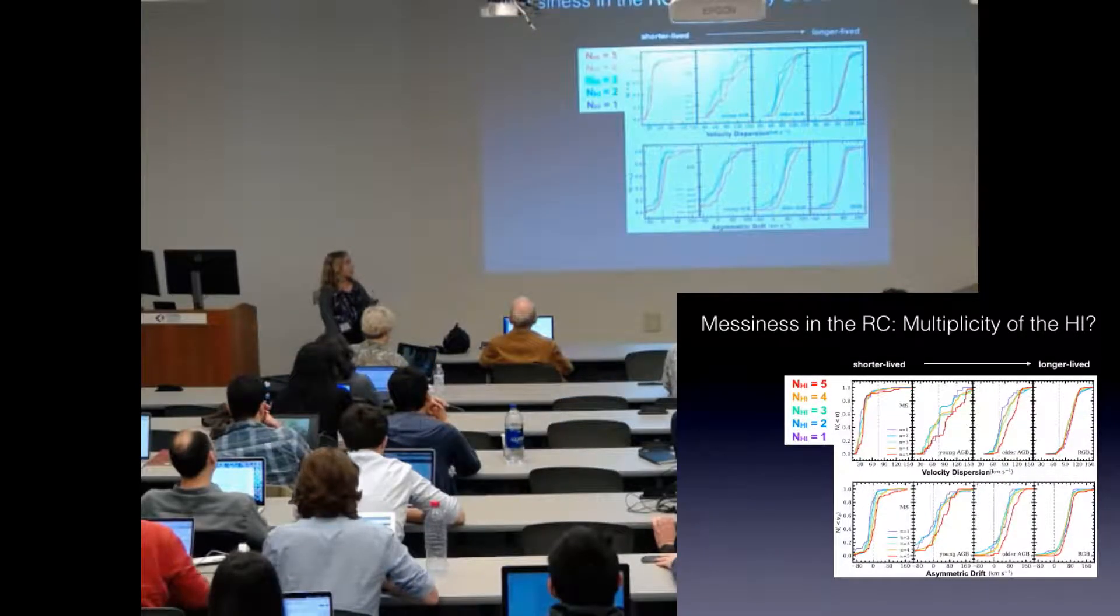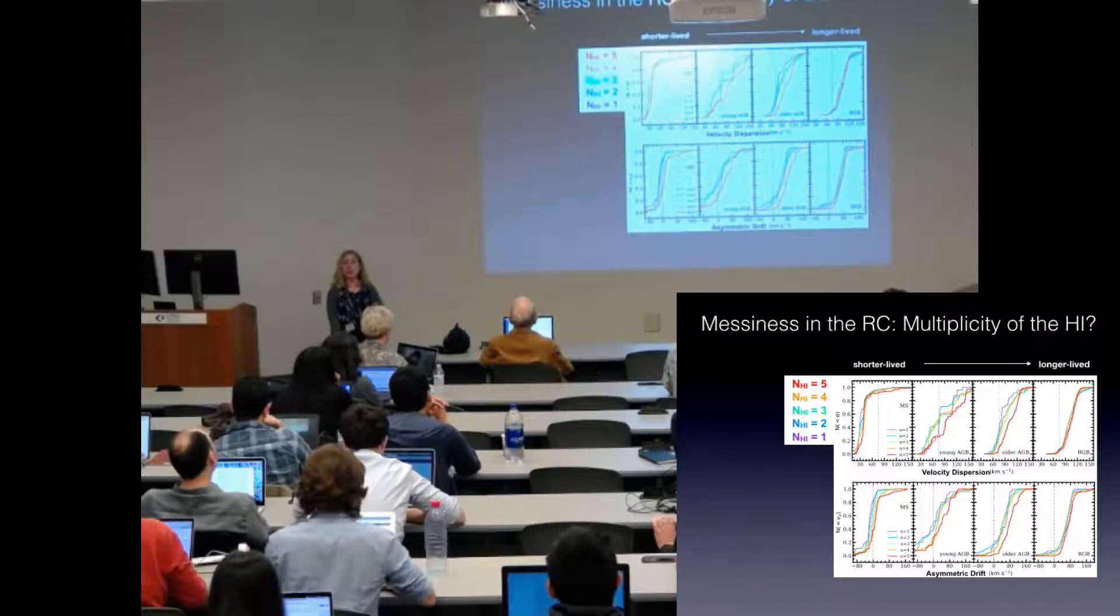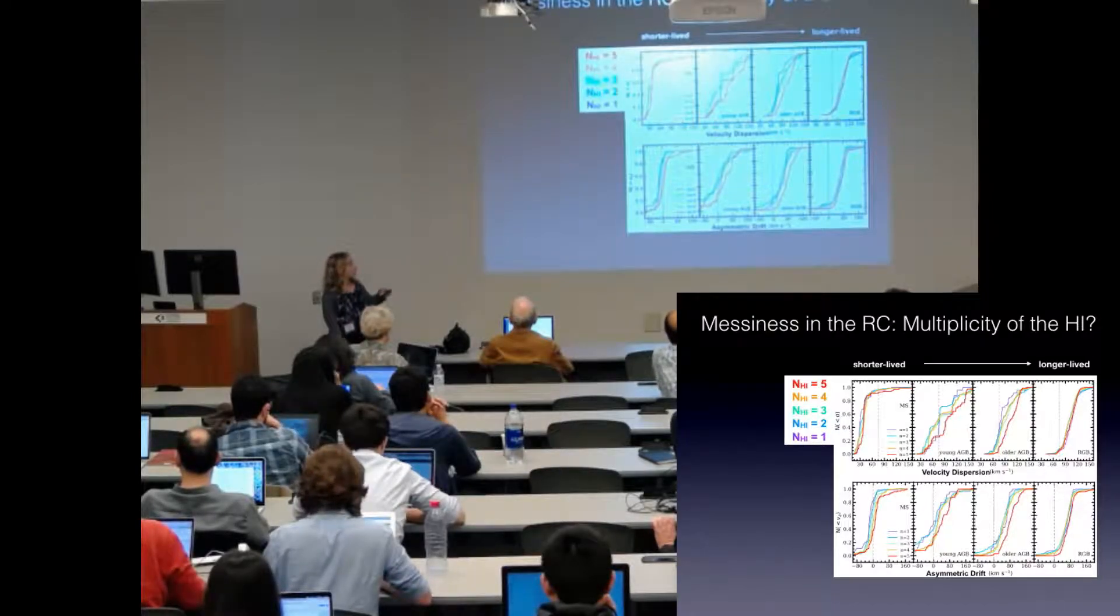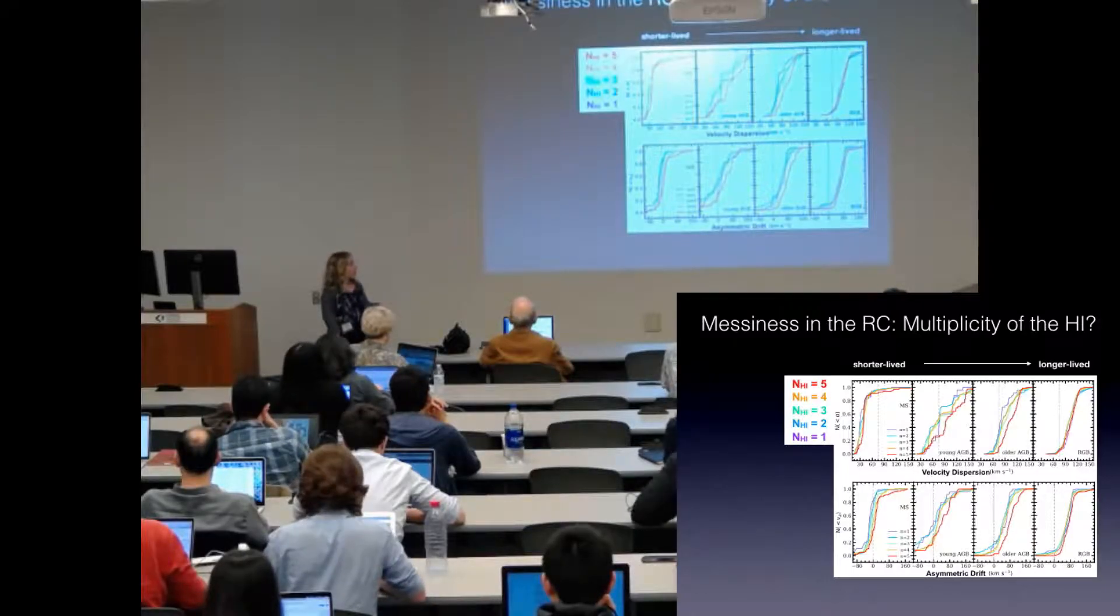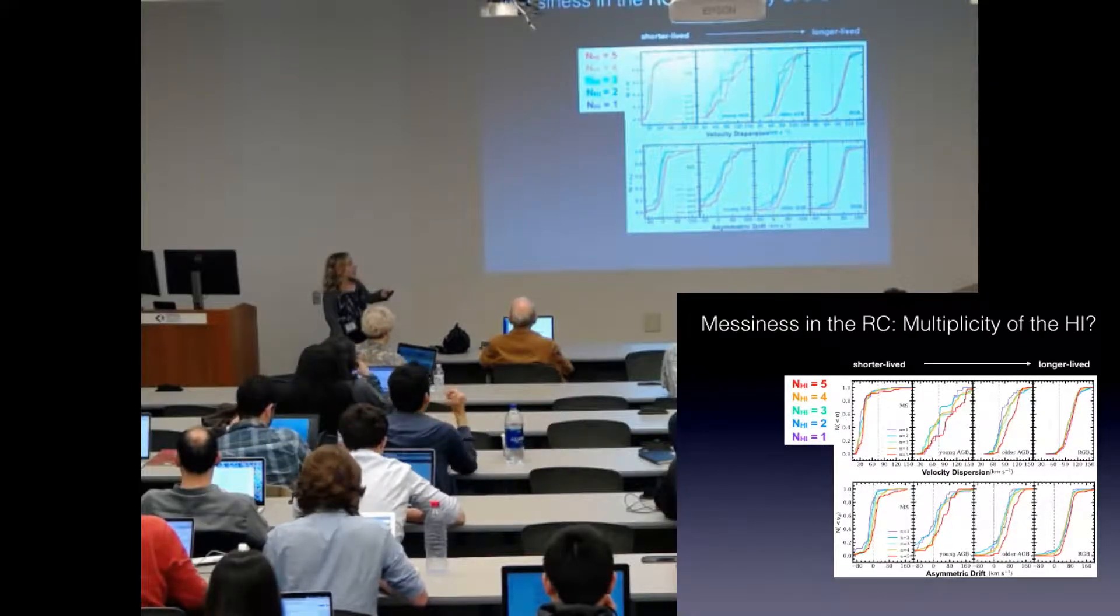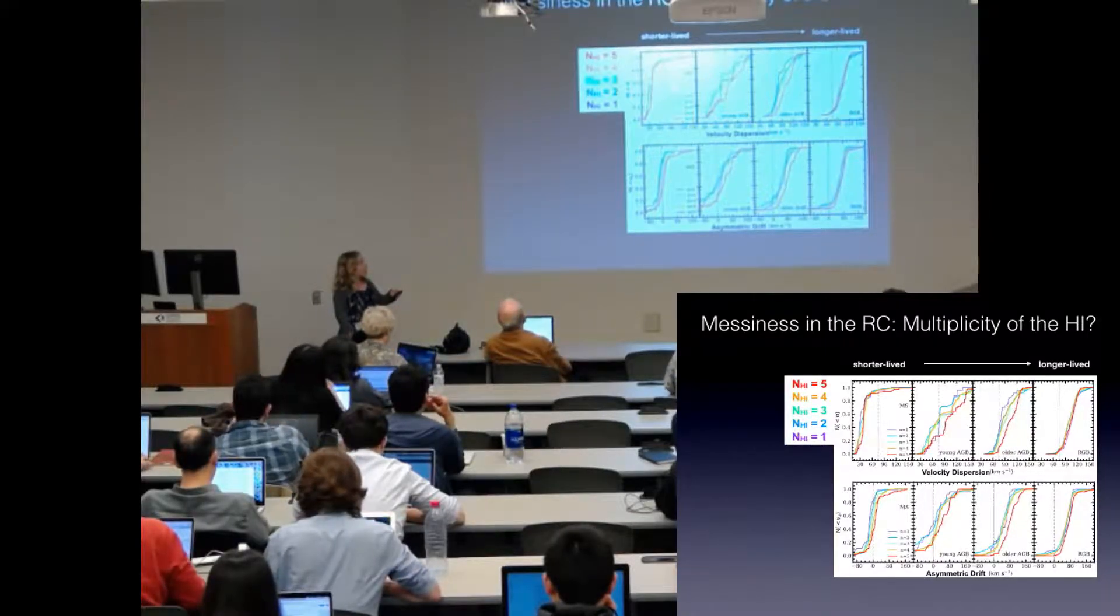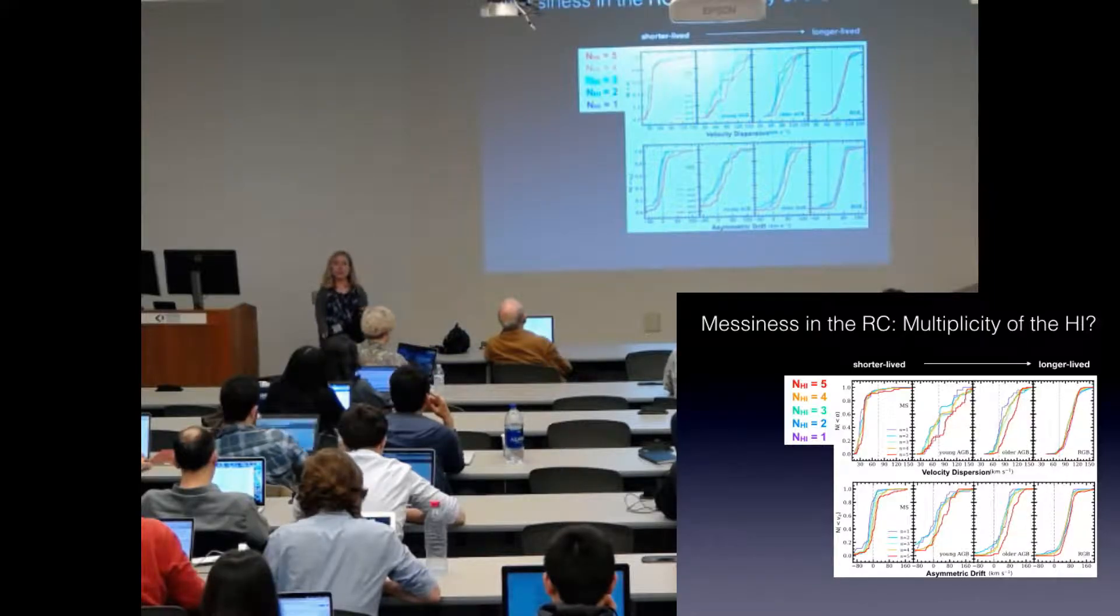I've broken each of the age groups, the stellar age groups, down based on the complexity of the line of sight as denoted by the number of peaks in the H1. In this top panel, you see velocity dispersion cumulative histograms. In the bottom panel, asymmetric drift cumulative histograms. The shortest-lived main sequence stars are in the first column, then the young AGB, the older AGB stars, and the longest-lived RGB stars. Each line in the panel represents a different complexity of line of sight.